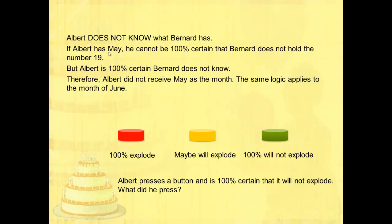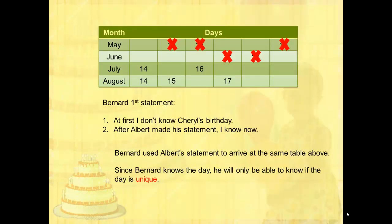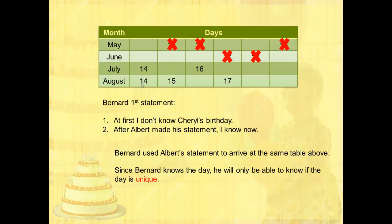In the same way, Albert cannot have May for the same reason. Now let's look at Bernard's first statement: at first I don't know Cheryl's birthday, but after Albert made his statement, I know now. Bernard can use Albert's statement to arrive at the same table. Since Bernard says he already knows Cheryl's birthday, this is only possible if the day is unique. So we can strike out 14, which appears in two remaining months.